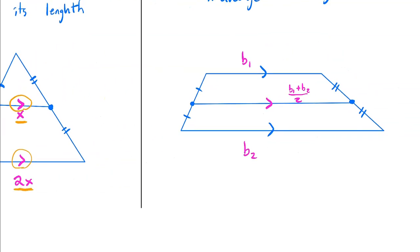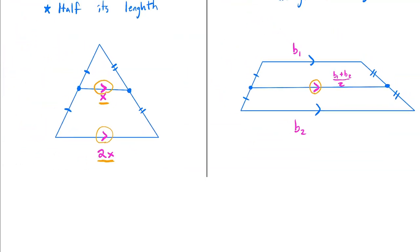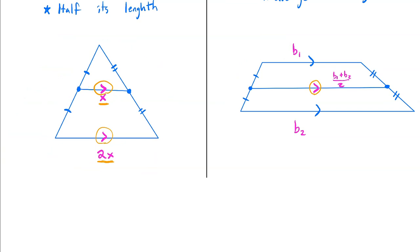Similarly, in a trapezoid, it is parallel to the two bases, and it's the average of the two lengths. So you add the b1 plus b2 and divide by 2. It's actually really this is just a trapezoid where the top length is 0. And so the average of 0 plus 2x, the two bases, divided by 2, comes out to be x. So it's actually one rule for both, but we look at it in two separate ways.